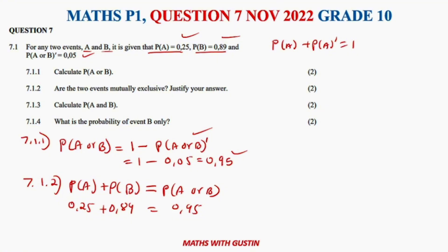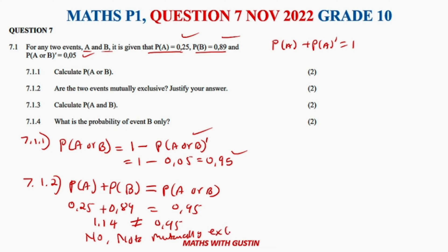Let's check on the calculator: 0.25 plus 0.89 gives us 1.14. This is not equal to P(A or B) which is 0.93, so they are not equal. Therefore the events are not mutually exclusive — this formula is not satisfied.